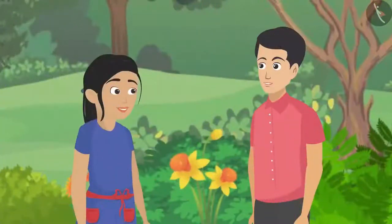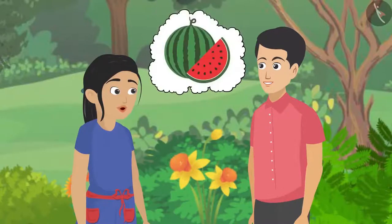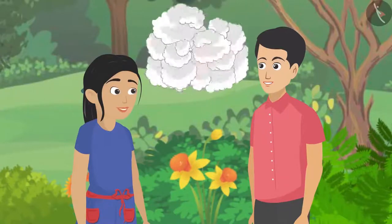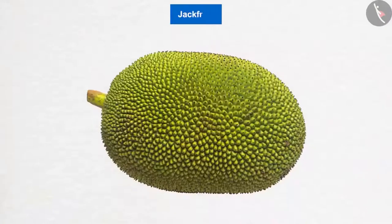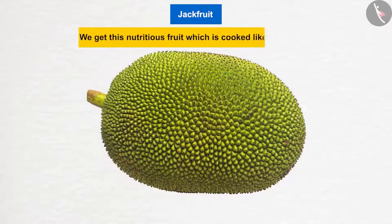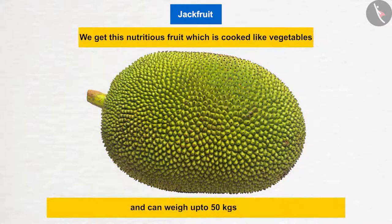Father asks the kids on which plant the largest fruit in the world grows. Pankaj guesses watermelon since they are discussing vines, but the correct answer is jackfruit, which hangs on the jack tree. Jackfruit can weigh up to 50 kg and is the largest of all fruits.